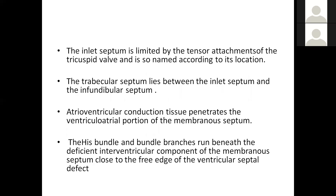The inlet septum is limited by the tensor apparatus attachment of the tricuspid valve and is named according to its location. The trabecular septum lies between the inlet and the outlet, as seen in the previous session. The atrioventricular conduction penetrates the ventricular-atrial component of the membranous septum, and the bundle of His and bundle branches run beneath the deficient interventricular component of the membranous septum, close to the rim of the ventricular septal defect.